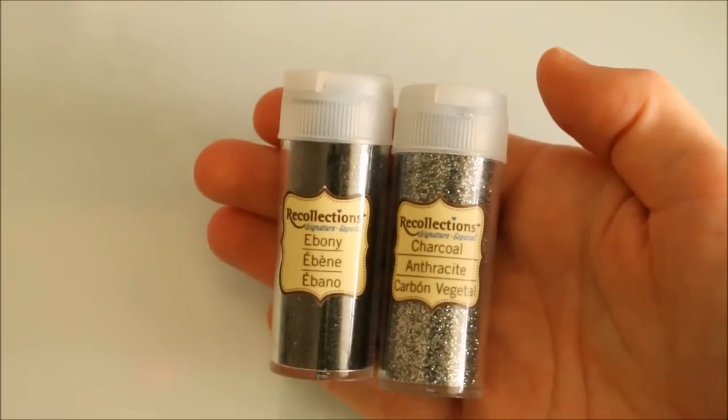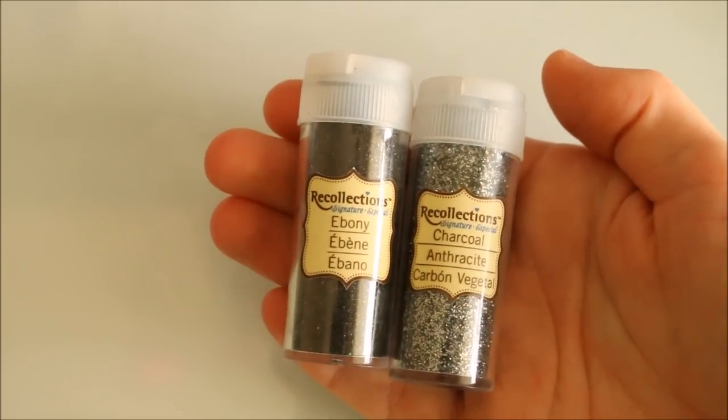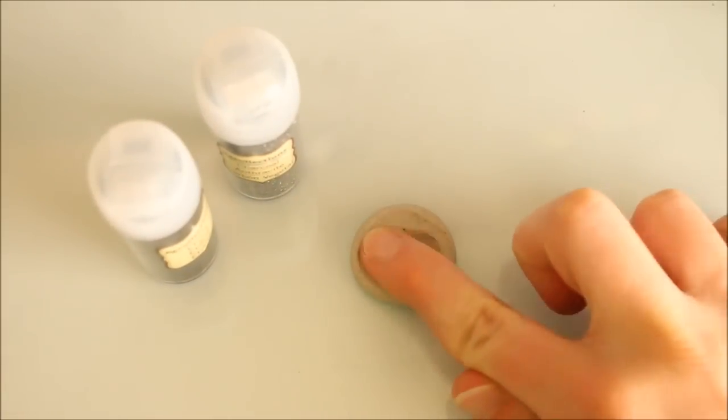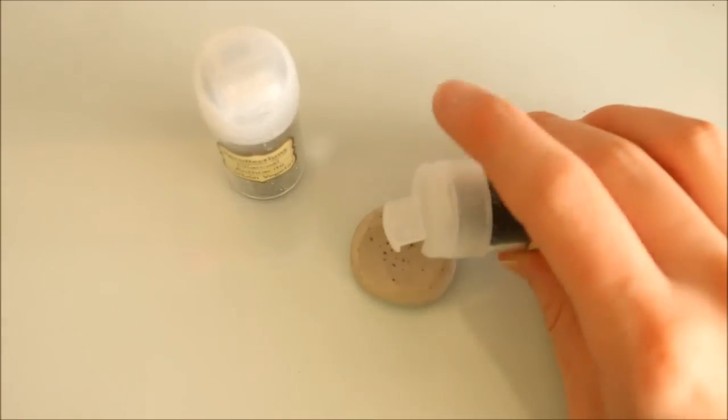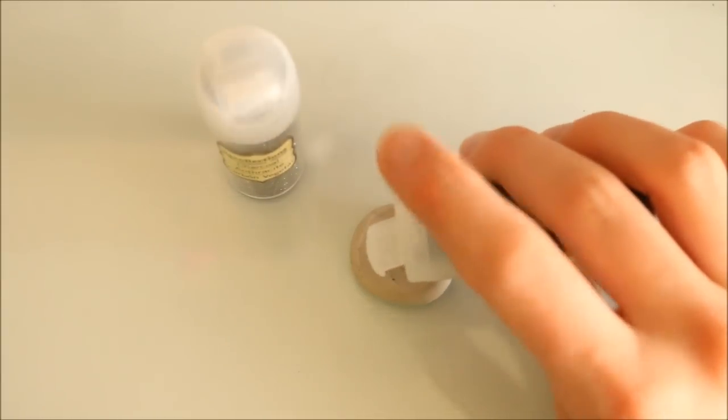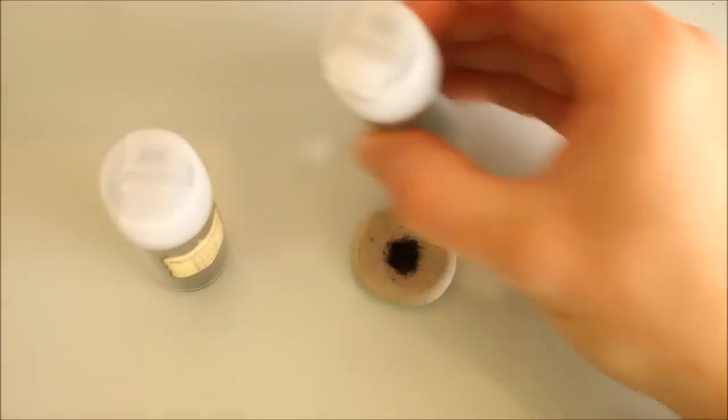I'm also adding in some glitter because if you look at the granite clay by Primo or Fimo it looks like it has a few tiny shiny specks in it. Here I'm pouring in the black glitter and then also a very small amount of some dark silver glitter as well.